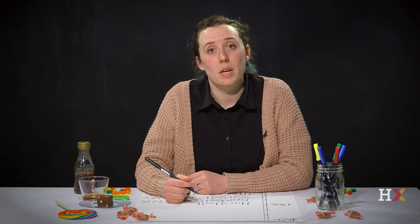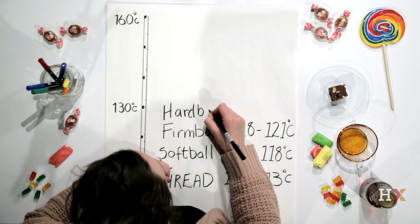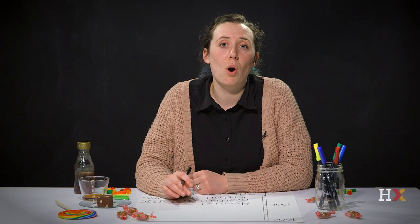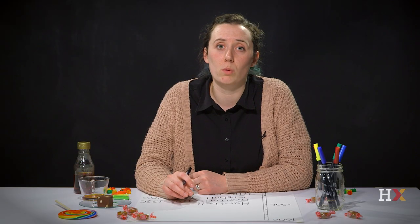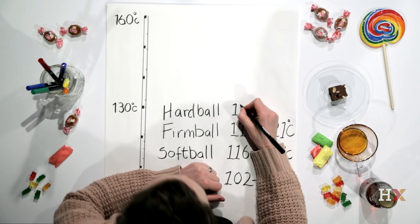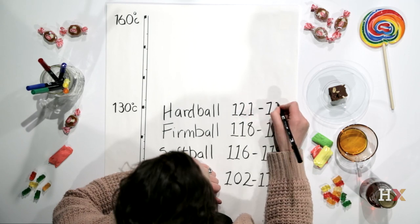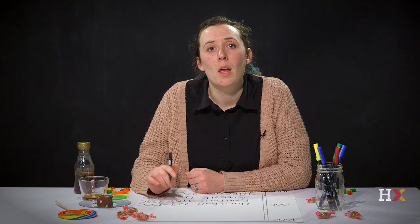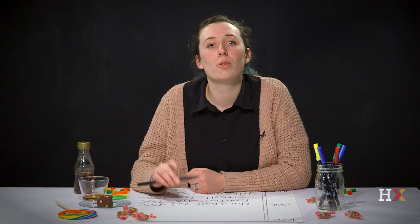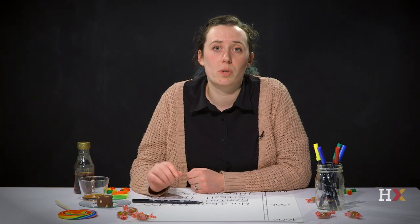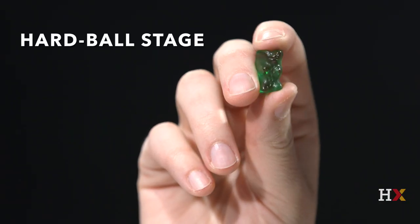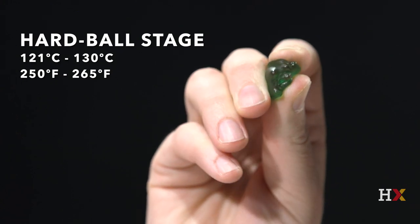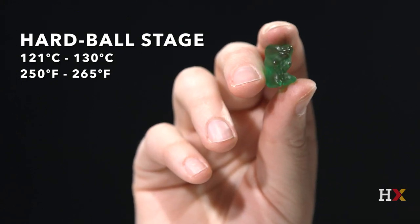At the fourth stage, the hard ball stage, the sugar will create a hard ball when dropped into cold water. This happens at 121 to 130 degrees Celsius. It won't flatten, but you can still alter its shape by squishing it. Gummies are a good example of candies made at this stage.